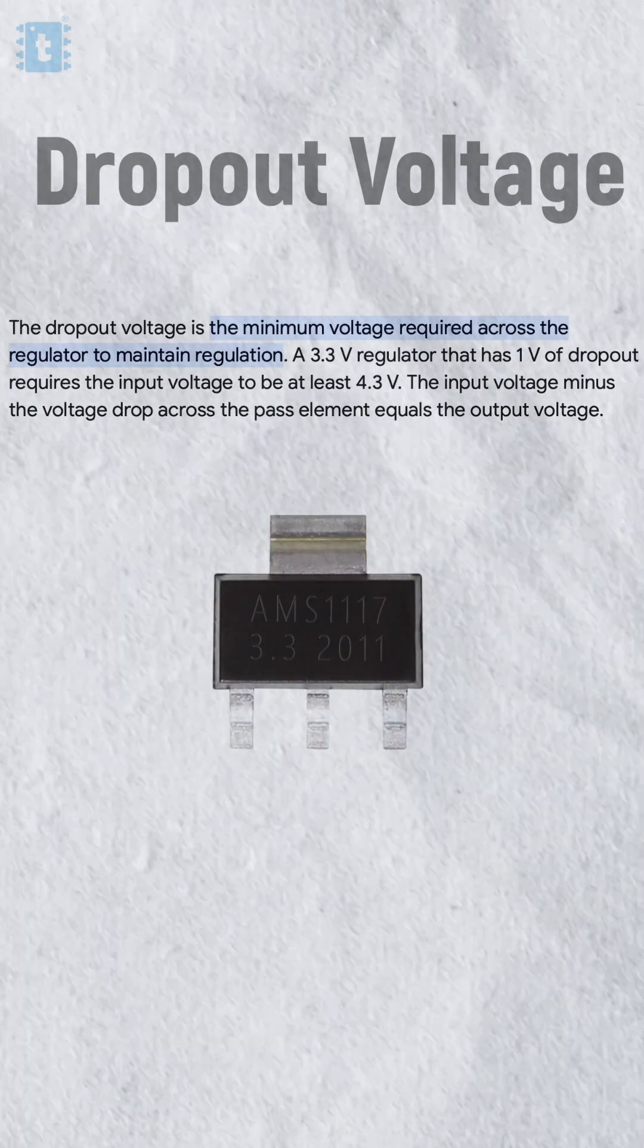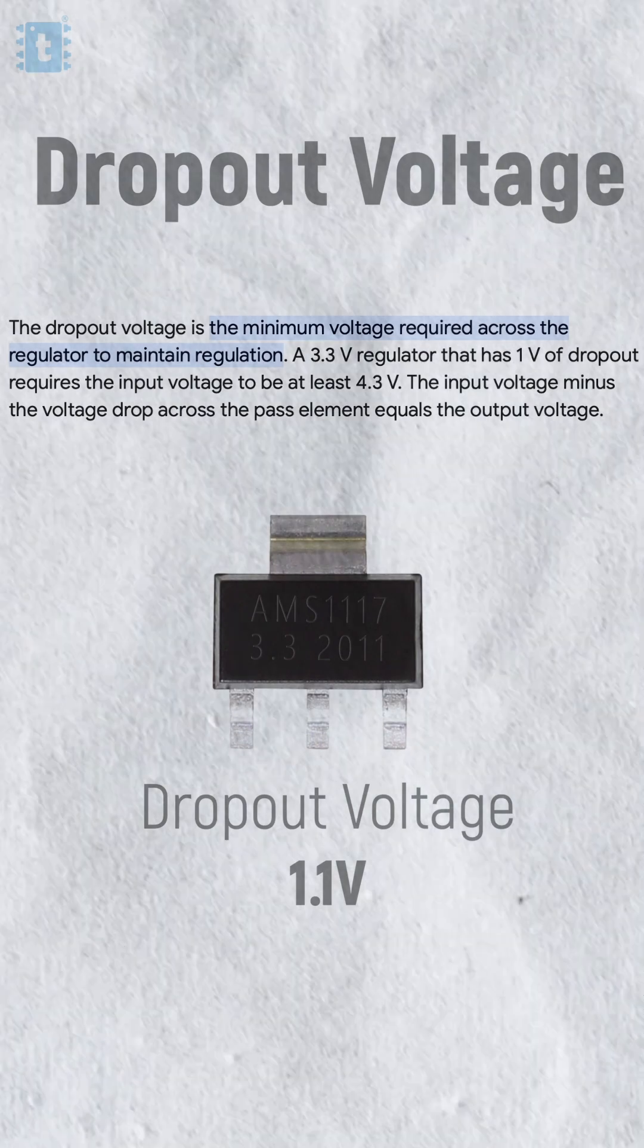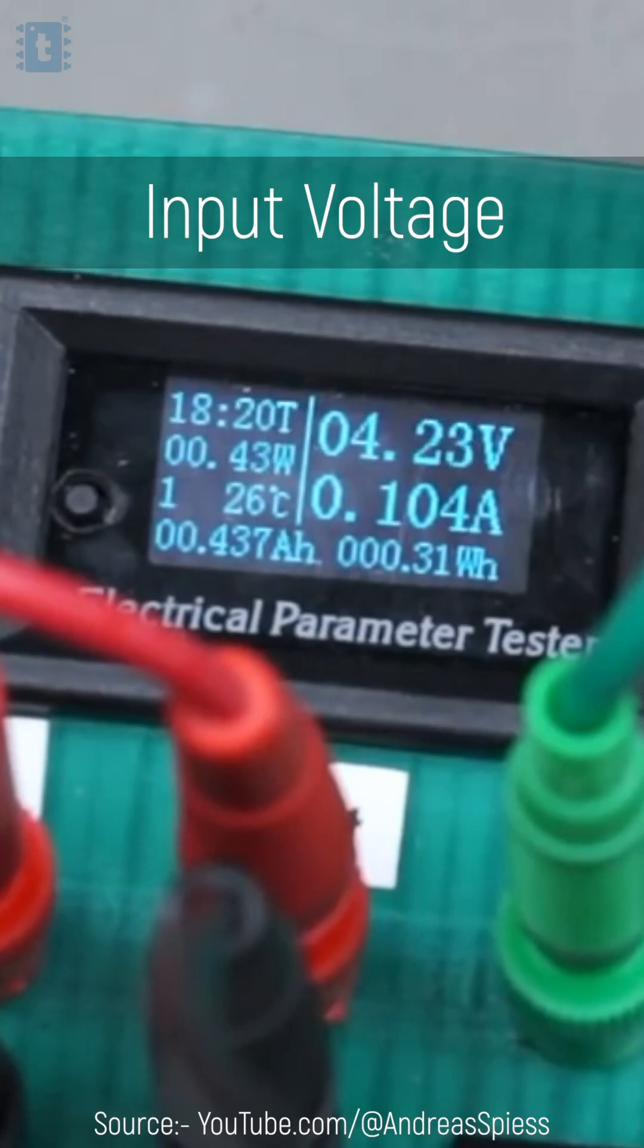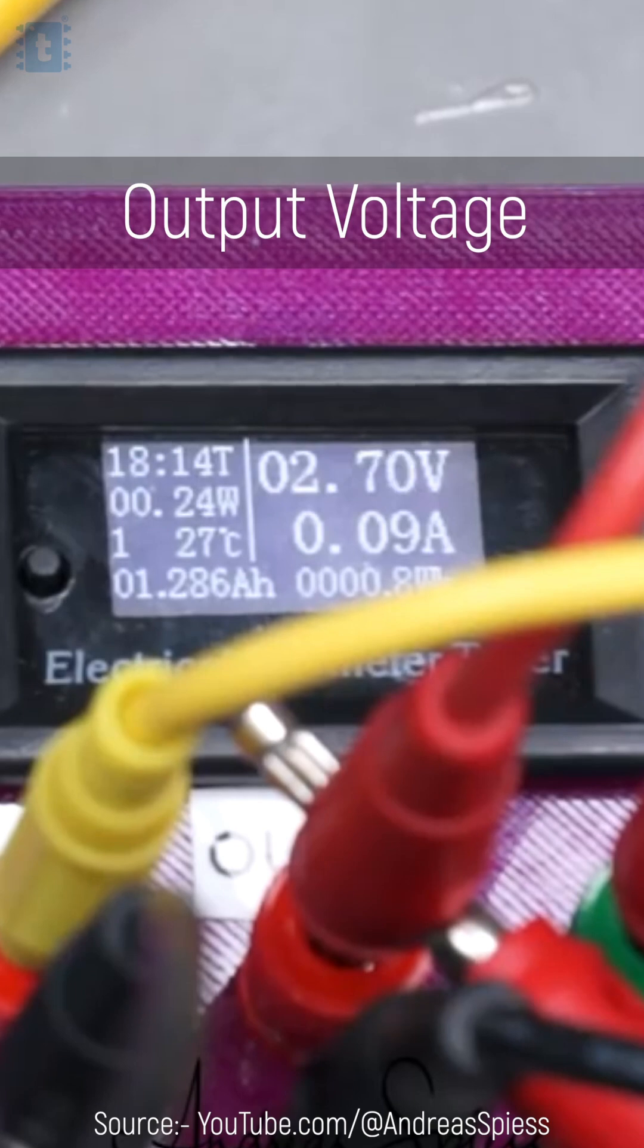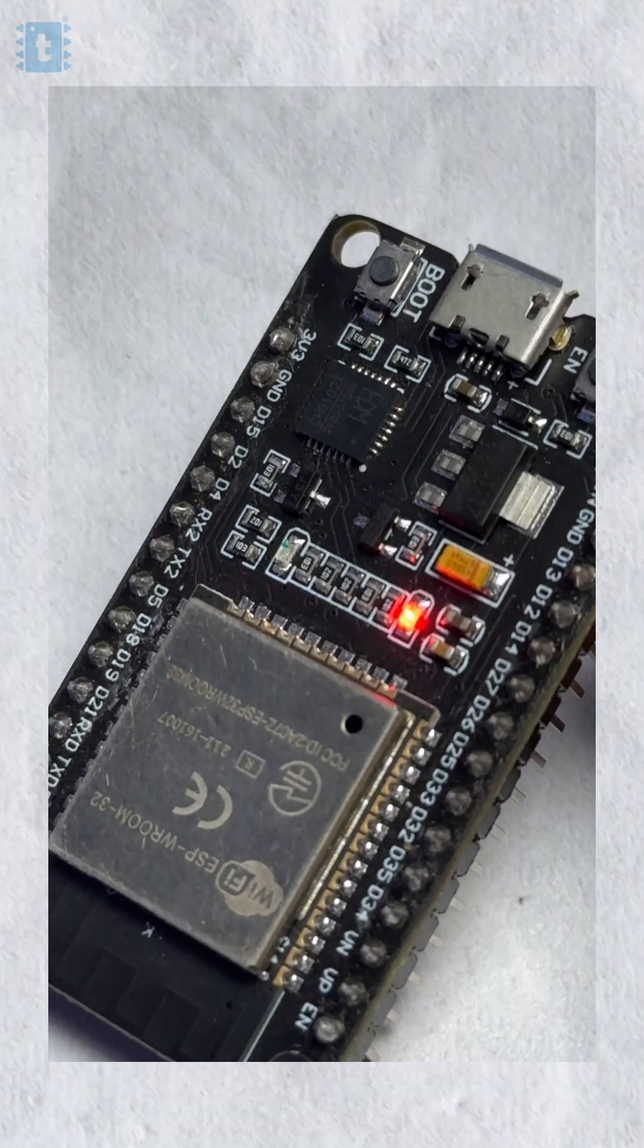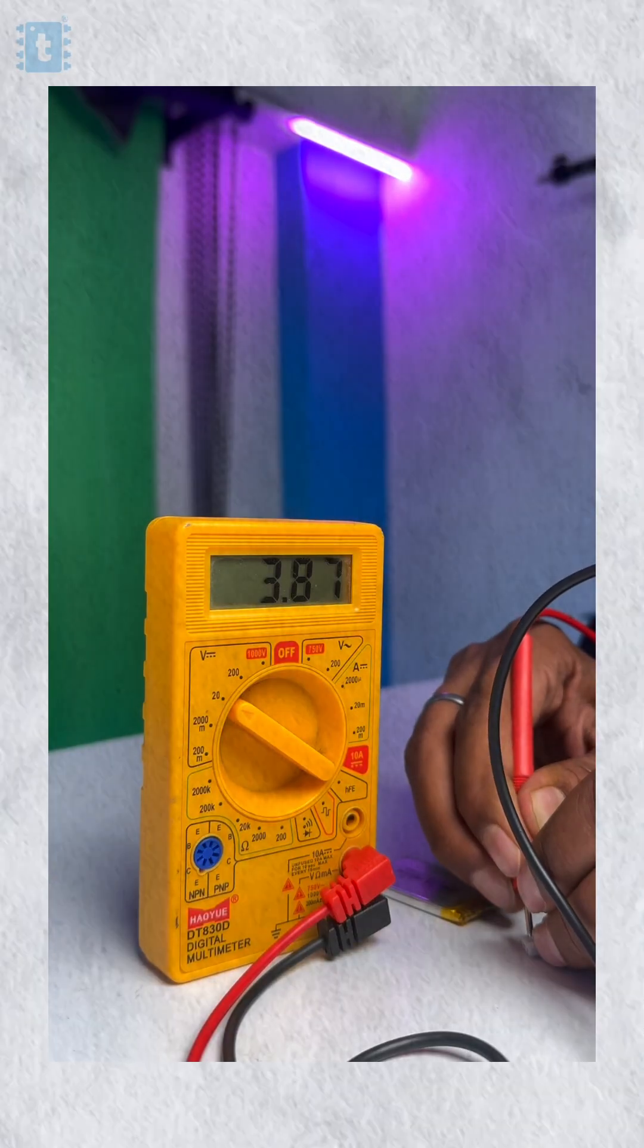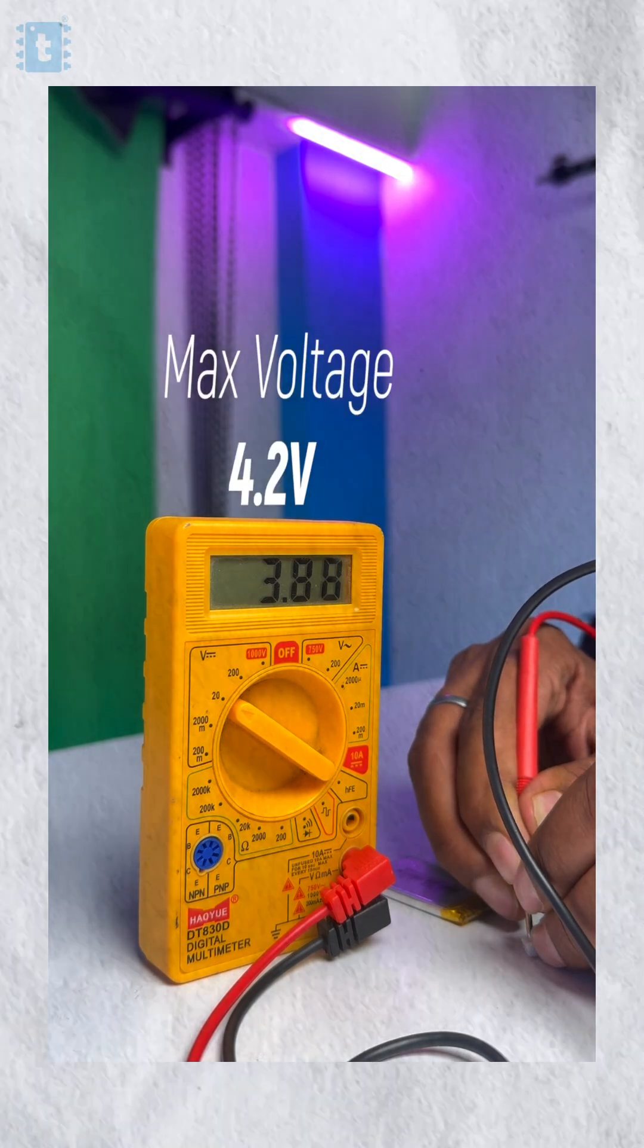In case of AMS117, it is 1.1 volt, which means if the voltage level goes below 4.2 volt, we won't be able to get the 3.3 volt stable output and our controllers may not work as expected. We all know that the maximum output voltage of a battery is 4.2 volts. So using AMS117, we can't make a battery powered project.